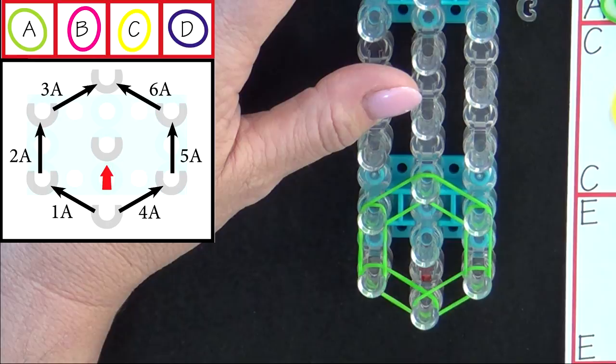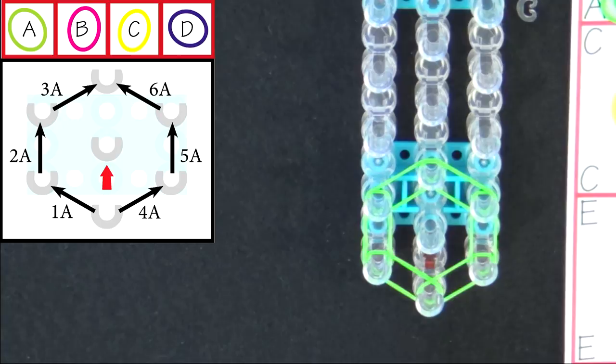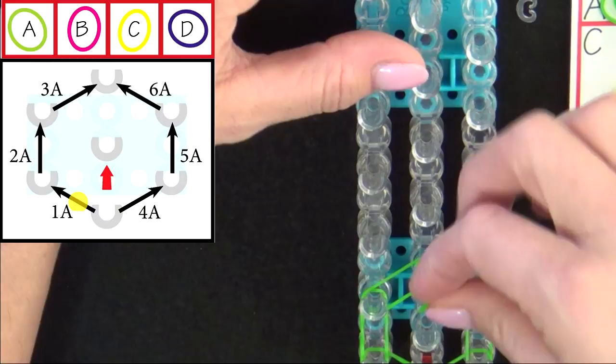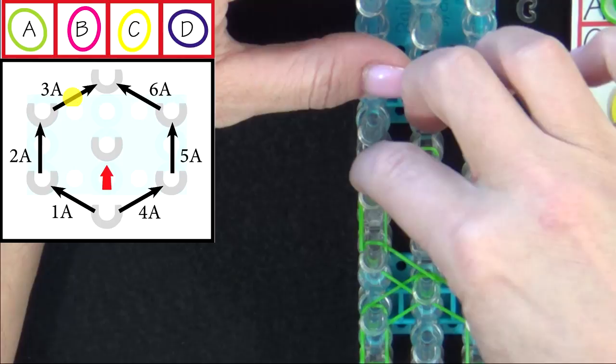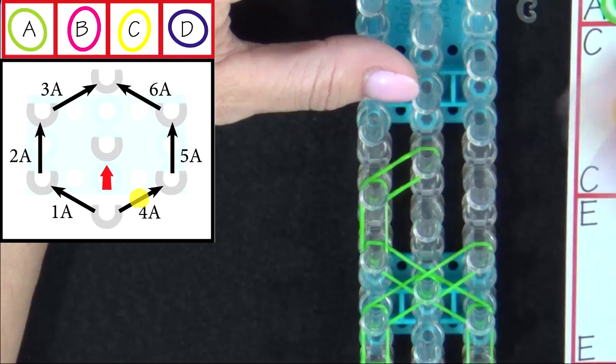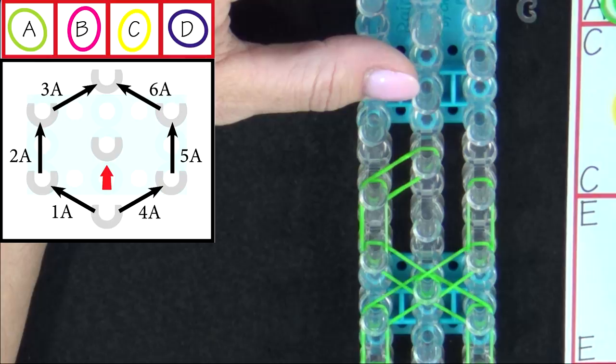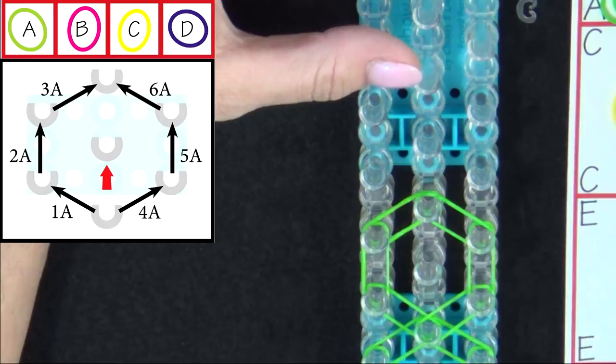I'll repeat this pattern one more time and then fast-forward to the end of the loom. Band 1A, band 2A, band 3A. Then we go back. Band 4A, band 5A, band 6A. Pause the video here and refer to the graphic on your screen until you reach the end of the loom.